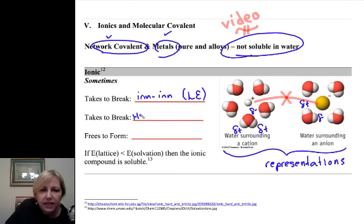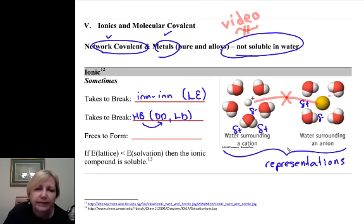Ion-ion, you have that. The hydrogen bonding along with dipole-dipole and London dispersion. Because if we're going to make room for the water to interact with the ion, we have to break the attractions between two waters. That frees them up to be attracted with the ion. And that's where we get our freeze to form.